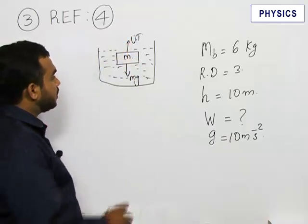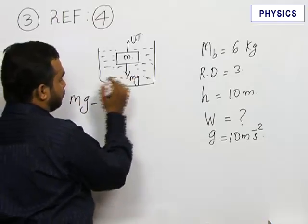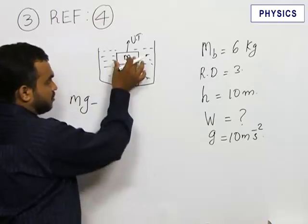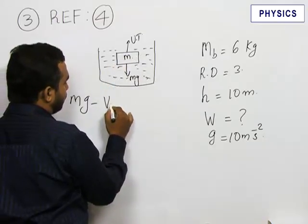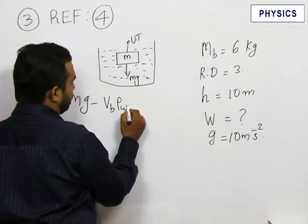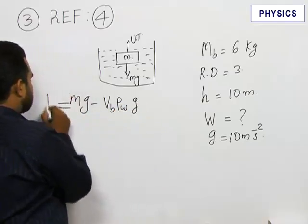The net force acting downward will be the weight mg minus upthrust. Upthrust will be the weight of the water displaced by this brick. That will be the volume of the brick into density of water into g. That will be the force mode here.